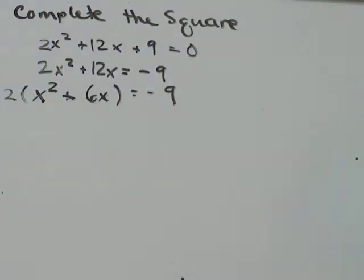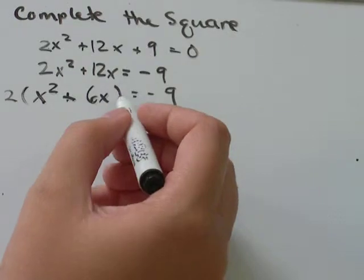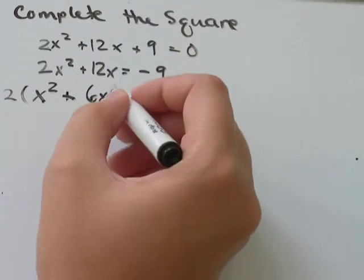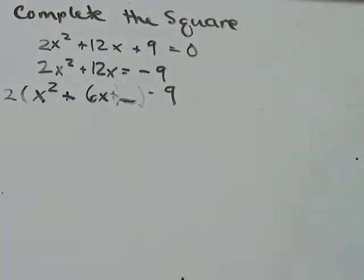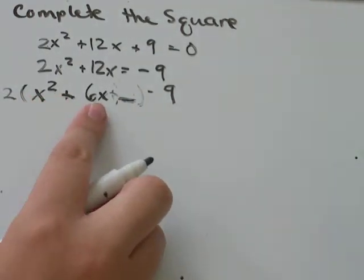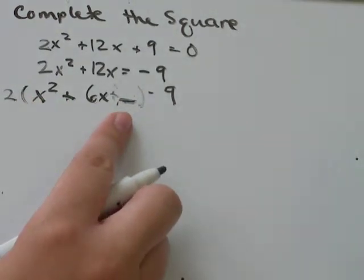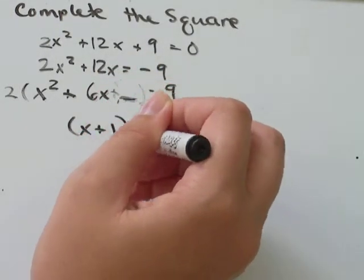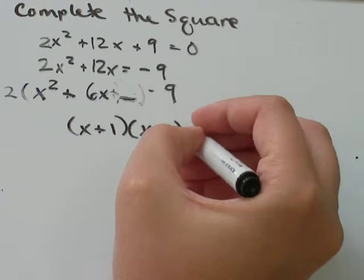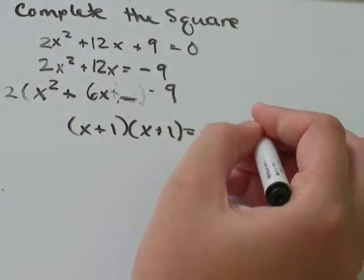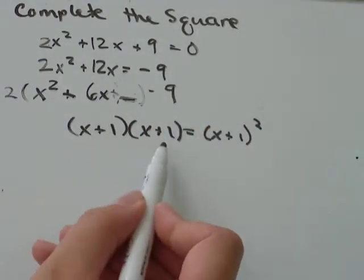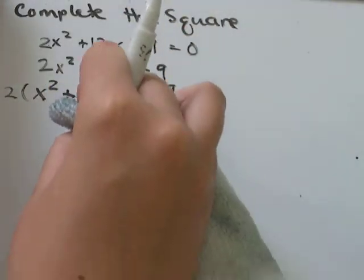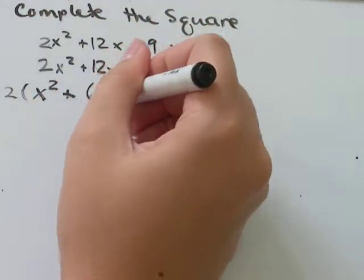So what we're doing with completing the square is we're adding on something right here. Some number that will make x² + 6x plus this number a perfect square. So remember a perfect square would be something like (x + 1) times (x + 1), which you can write as (x + 1)², something multiplied by itself.